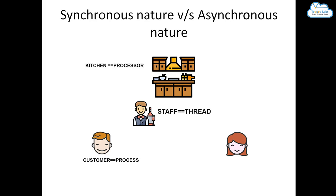Consider a hotel with a kitchen, staff, and customers. In a synchronous system, when a server takes a customer's order, he goes to the kitchen and waits until the food is fully prepared, then delivers it, then moves to the next customer. He cannot do multiple things at once. We can consider the staff as a thread — a small sequence of execution — and the customer as a process, with the kitchen as the processor.